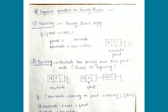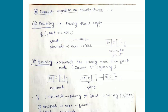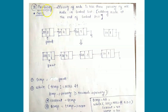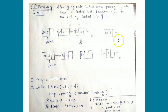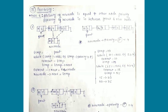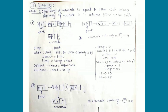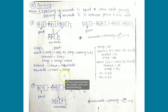To conclude: for the enqueue operation in a priority queue, there are three main possibilities. First, the queue is empty. Second, the new node has higher priority than the front node. Third, there are three sub-cases: the new node has the lowest priority of all (insert at end), the new node has equal priority to some existing node (insert after those nodes), or the new node's priority falls between front and rear (insert in the middle). I hope it is clear how to implement a priority queue using a linked list.